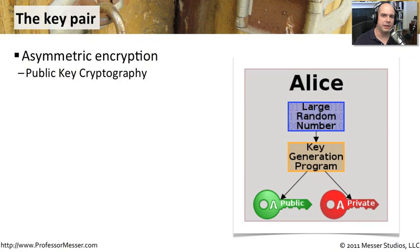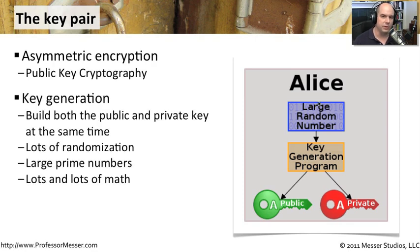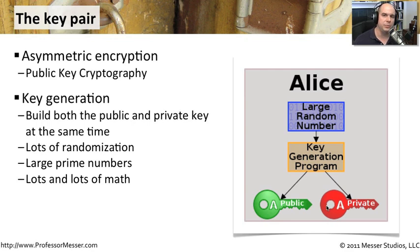Asymmetric encryption is a foundation of public key cryptography. It uses a private key and a public key. When creating these keys, a lot of mathematics is involved — including randomization and prime numbers — to build the relationship between them. Both keys are created at exactly the same time, resulting in a public key you can give to anyone in the world and a private key you keep private to yourself.